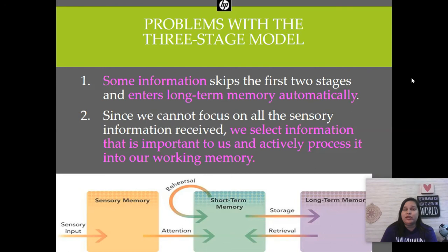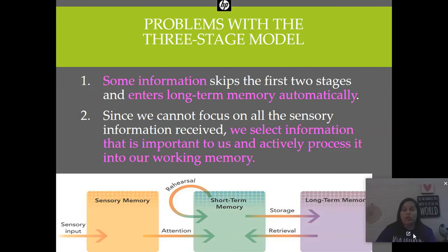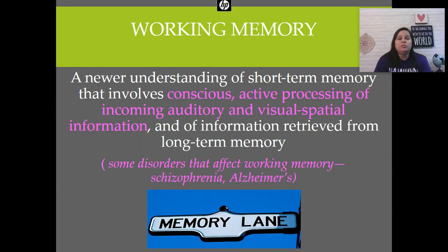The problem with the Atkinson-Schiffrin model, though, is it doesn't really explain how sometimes information skips those first two stages and goes straight to long-term memory automatically. We'll talk about this in a future section — things that are traumatic or extremely emotional go straight to long-term memory. We also can't focus on all the sensory information we receive; we select some of it, and then it goes into working memory. The model doesn't really accurately describe working memory.